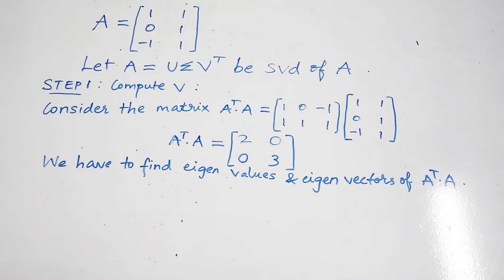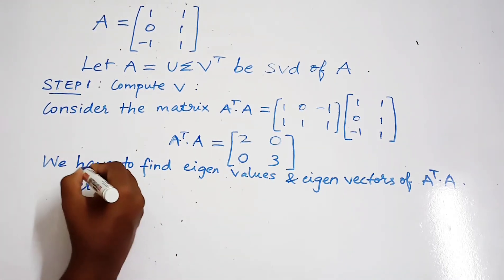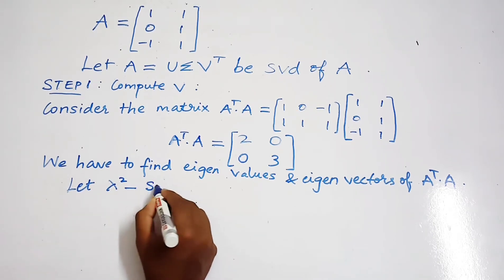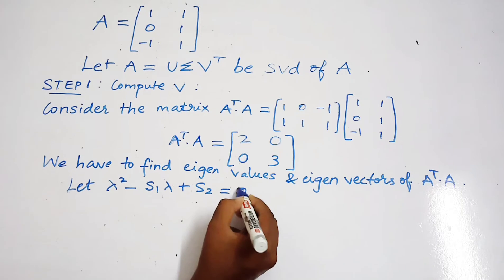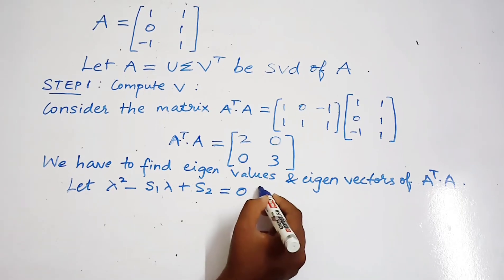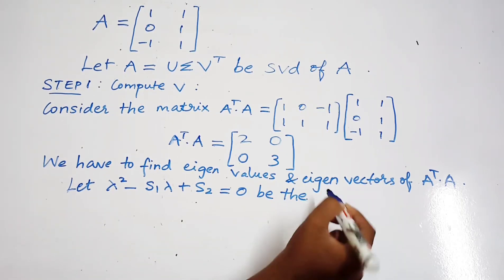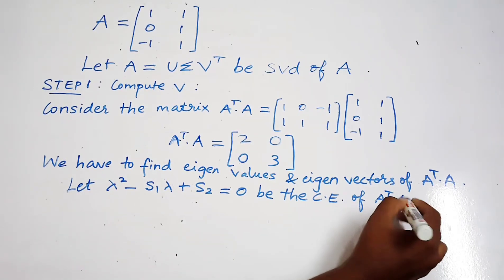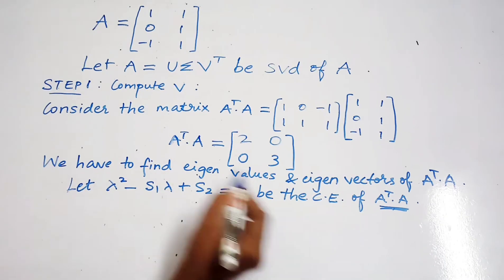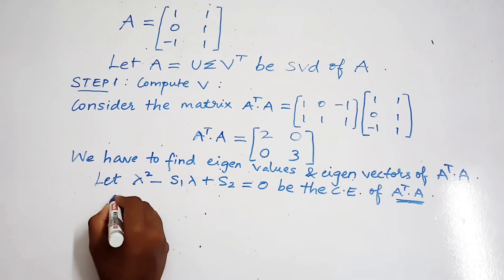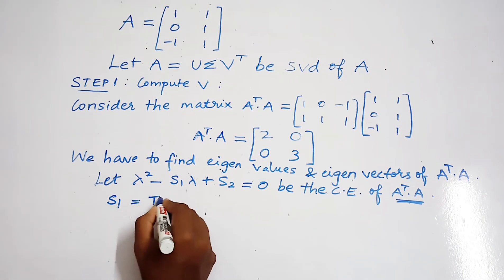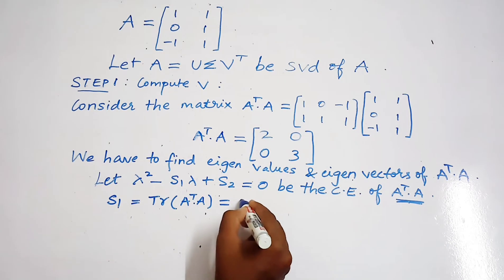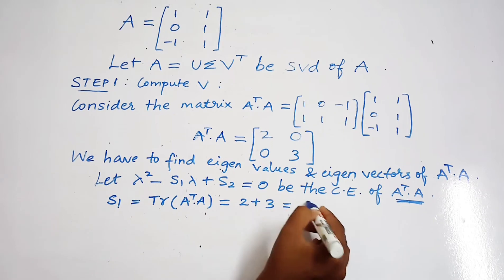Next we have to find eigenvalues and eigenvectors for the matrix A transpose A. Let lambda squared minus S1 lambda plus S2 equals 0 be the characteristic equation of A transpose A. Here S1 is the trace of A transpose A, which is the sum of diagonal elements: 2 plus 3, that is 5.